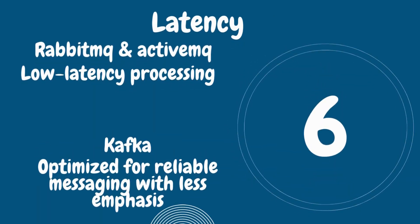Number six is latency. Kafka is designed for low latency processing, while RabbitMQ and ActiveMQ are optimized for reliable messaging with less emphasis on latency.